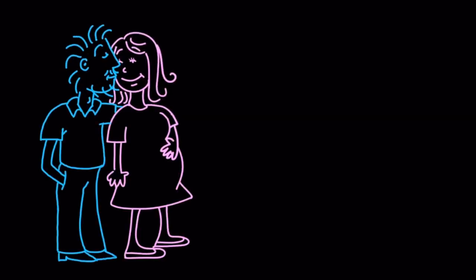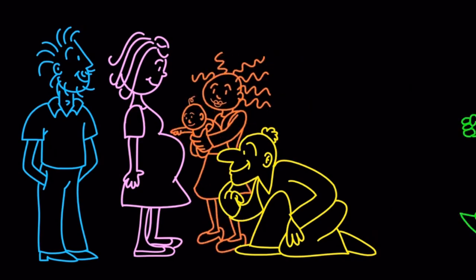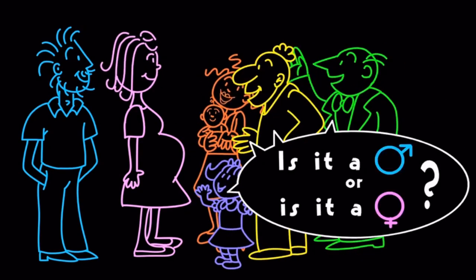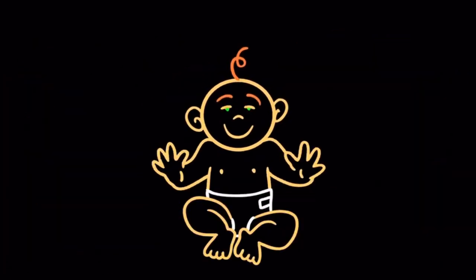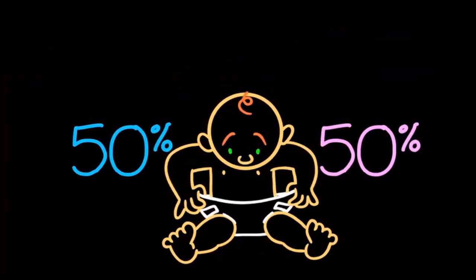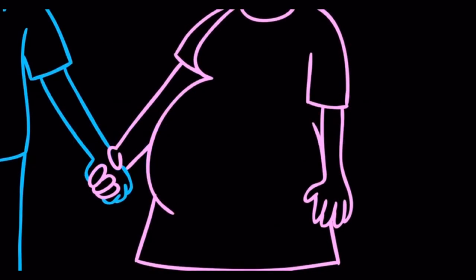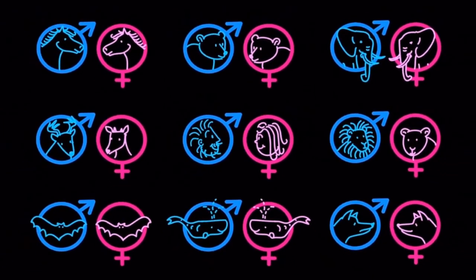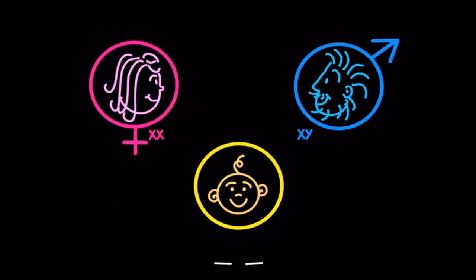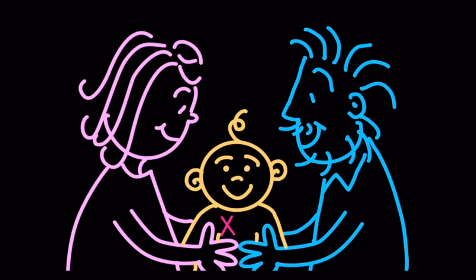My wife is pregnant right now with our first child, and the first question people ask is: is it a boy or is it a girl? For human babies, we take it for granted that there is a 50-50 chance of either answer. The answer depends on the sex determination system that evolved for our species. For most mammals, sex is determined genetically with the XY chromosome system: a pair of X's gives a girl, and an X and Y together gives a boy. Since females only have X's to pass on in their eggs and males can give either an X or a Y in their sperm, sex is determined by the father, with a 50-50 chance of male or female.